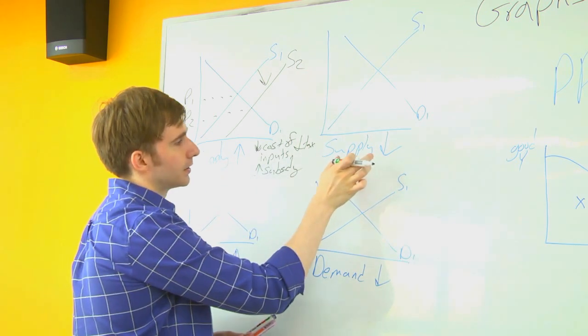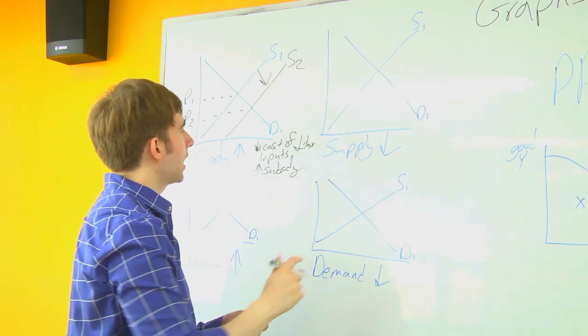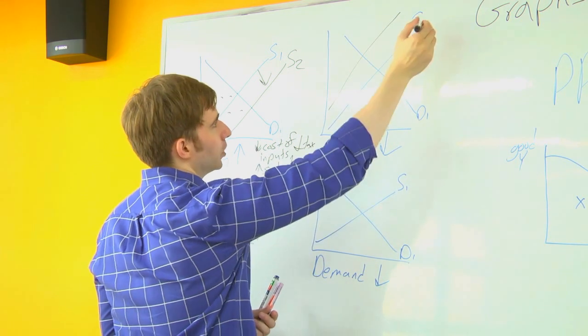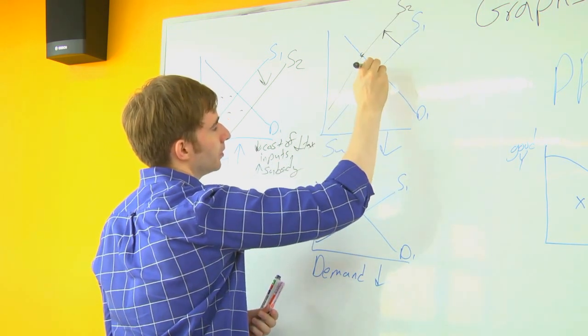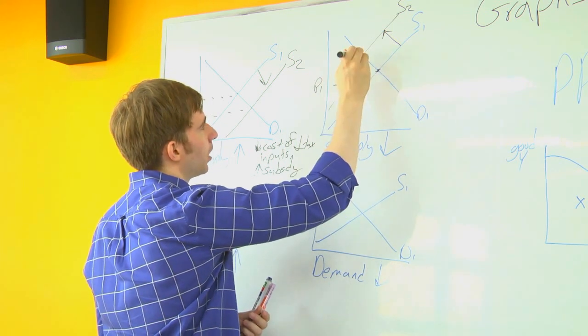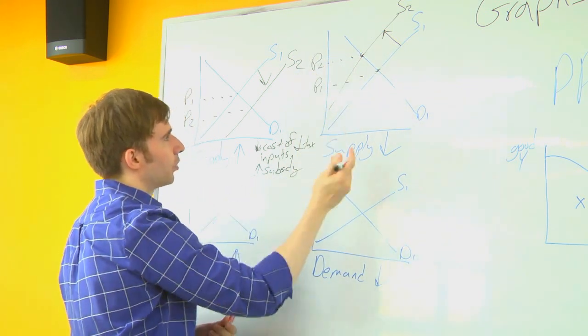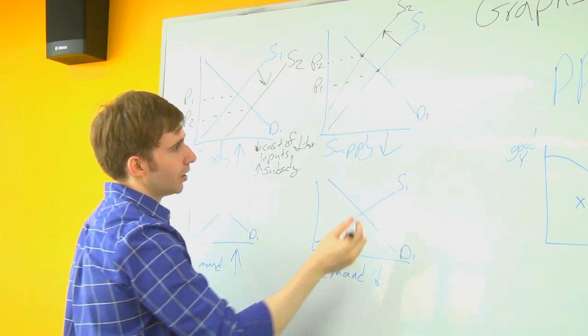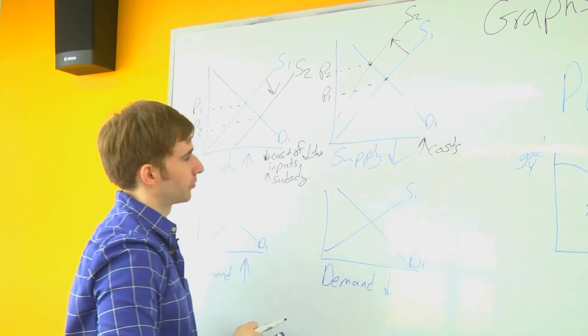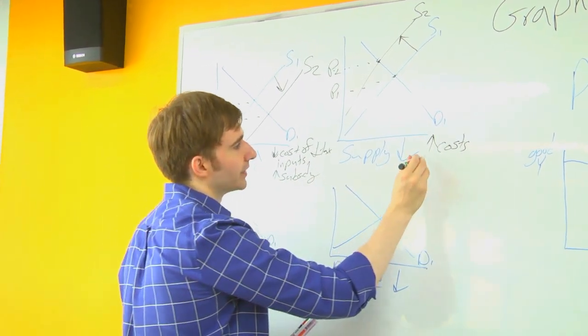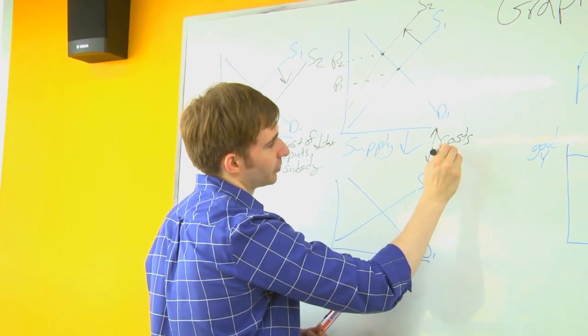What about what can decrease our supply, which will raise price from P1 to P2? So the opposite. An increase in our costs, an increase in tax, or a decrease in government subsidies.